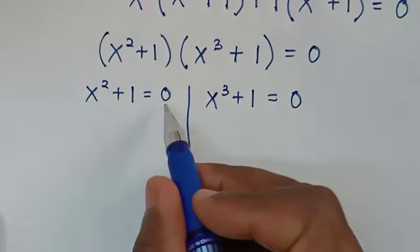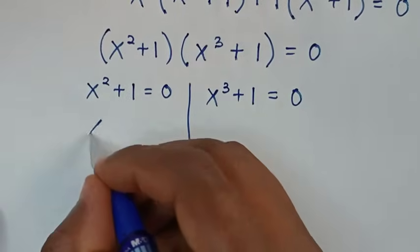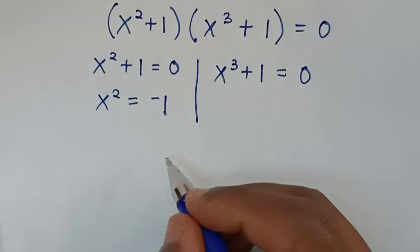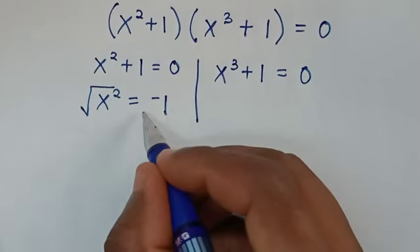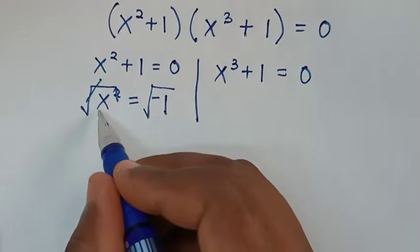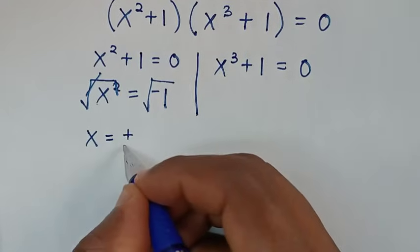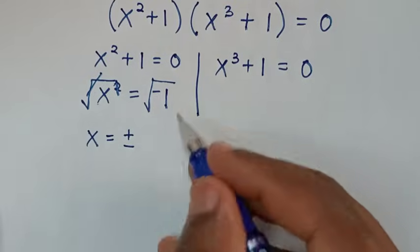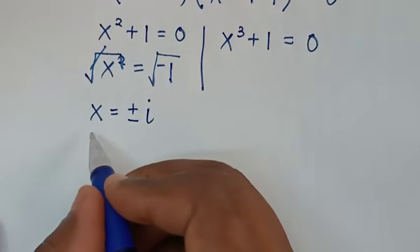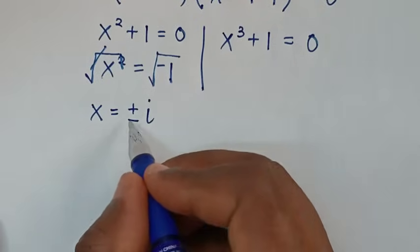To solve from the first solution, we take 1 to the other side so it will be x squared is equal to negative 1. Then we apply square root on both sides, so the square root cancels with the square. It will be x is equal to plus or minus the square root of negative 1, which is i. So here we get two values of x which are i and negative i.